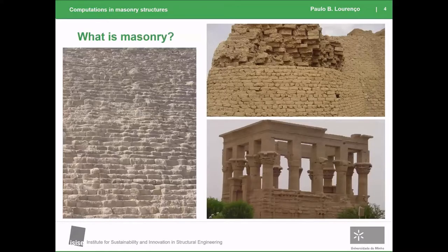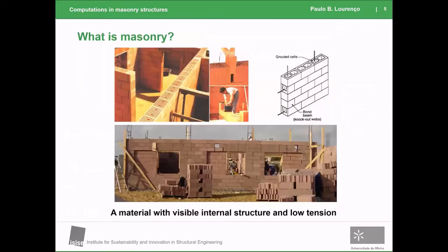Masonry is not a simple definition because it basically consists of adding some masonry units — some pieces of stone or brick — on top of each other, with or without mortar to hold them together. In a simplified way, this is typically a material which has a visible internal structure, so the masonry units are normally quite large and we can see them. It has very low tensile strength. There are modern applications where you put reinforcement to overcome this deficiency, but I will not be talking about reinforced masonry today — that's a very similar material to reinforced concrete in several applications.